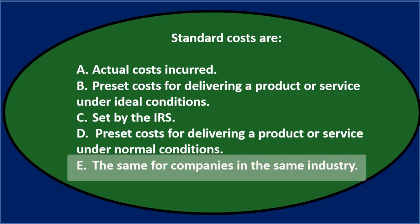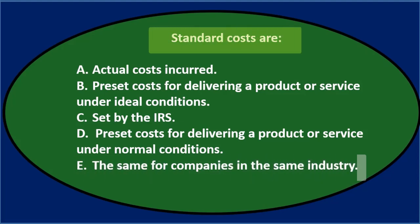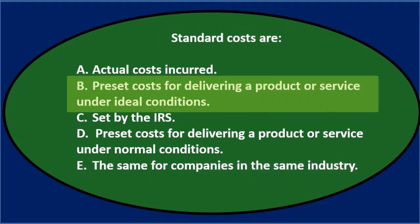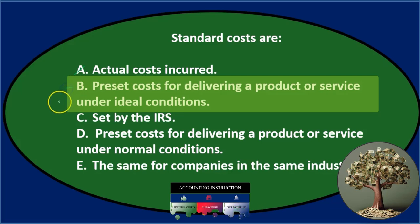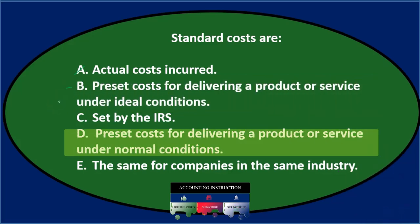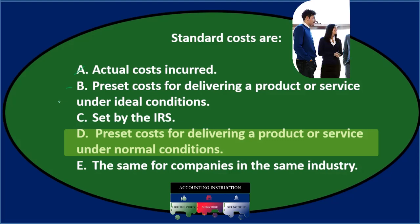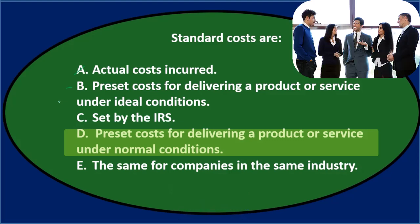Let's go through this using the process of elimination. Standard costs are not normally the actual costs — they're more like the budgeted costs, so A is out. B says preset costs under ideal conditions — that sounds reasonable, we'll keep it. C says set by the IRS. Since managerial accounting is typically for internal decision making, it's not normally set by a regulatory agency, so we can cross out C.